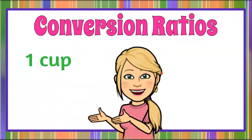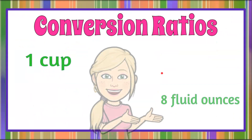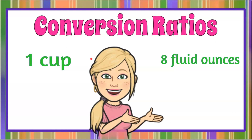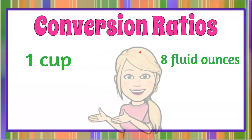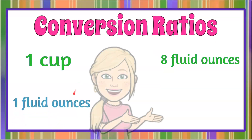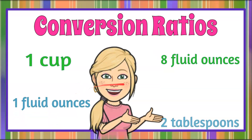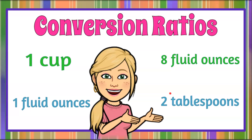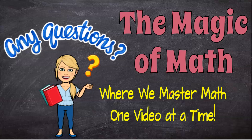And there you have it — that's conversion ratios: one cup to eight fluid ounces, and one fluid ounce to two tablespoons, which you can use to convert any measurement. That's the magic of math, where we master math one video at a time.